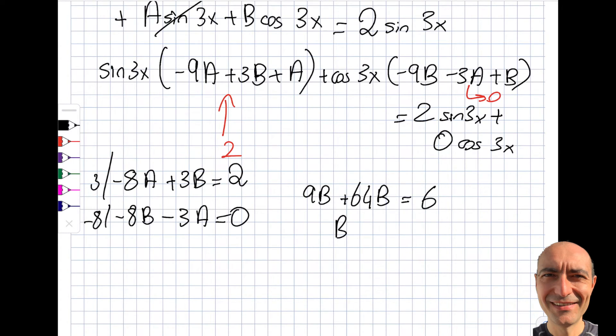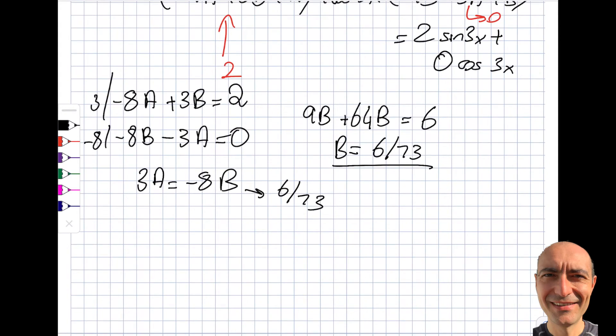So you see that I get myself b is equal to 6 by 73, weird number, but it is what it is. Let's do the second one then. Here is what it says, 3a is equal to minus 8b, so that's going to be a minus sign, and this is 6 by 73. So you can see 2 is 16. So I get myself a is equal to minus 16 by 73.